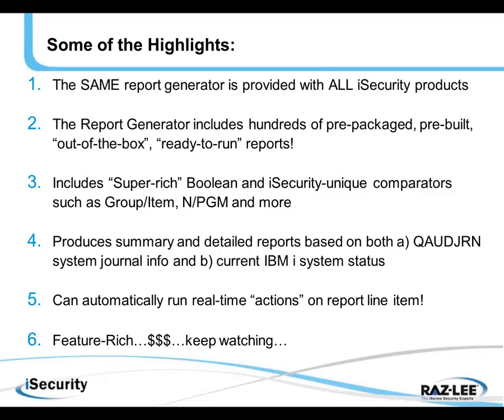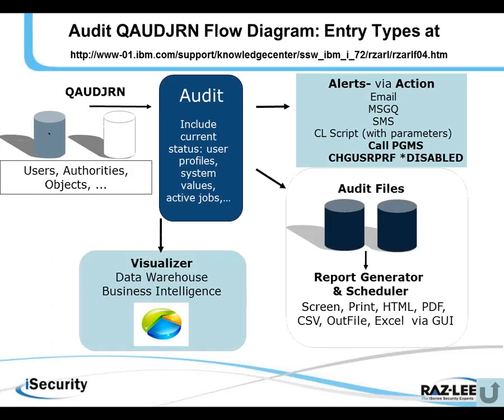It includes super-rich Boolean and iSecurity unique comparators, which we'll see in a few moments. The report generator produces summary and detailed reports based both on the QWater Journal, the system journal information, as well as on current IBM i status of the system. And we can automatically run real-time actions on report line items — a request we've received from many of our users. In short, the report generator is feature-rich, so keep watching.